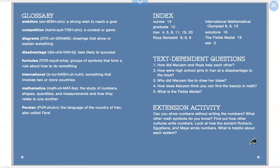Text-dependent questions. You can pause the video and practice answering these questions. One, how did Maryam and Roya help each other? Two, how were high school girls in Iran at a disadvantage to the boys? Three, why did Maryam like to draw her ideas? Four, how does Maryam think you can find the beauty in math? Five, what is the Fields Medal?